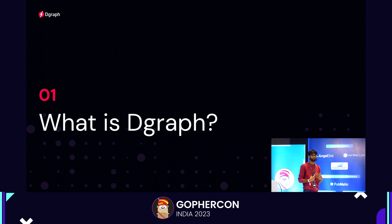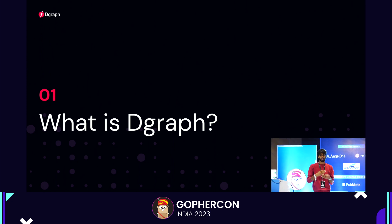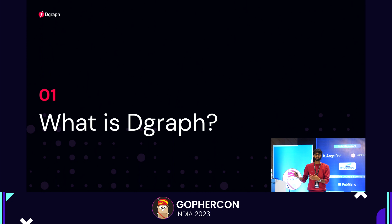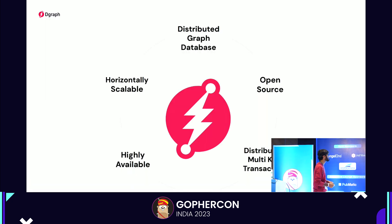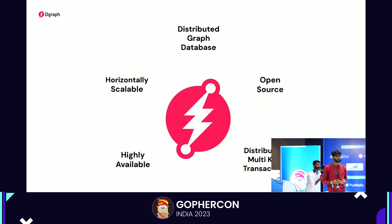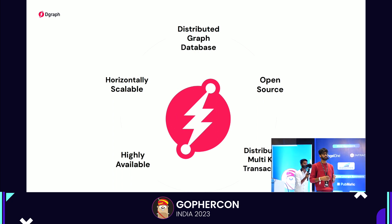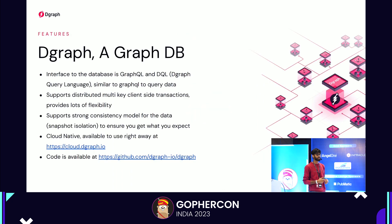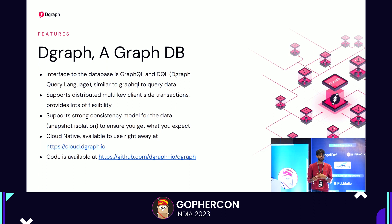Because I work at DGraph, my talk will include a lot of things about DGraph — just to give you references for how we do it. You can extend those ideas to your own context. DGraph is a distributed graph database. It is open source, horizontally scalable, and can scale to a large amount of data and many nodes. It's highly available — if one node goes down, other nodes keep the system running. It supports distributed multi-key transactions. The interface is GraphQL and DQL. GraphQL is a language developed by Facebook for building REST APIs. DQL is a custom-designed query language, very similar to GraphQL but with more power.